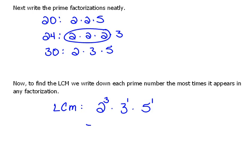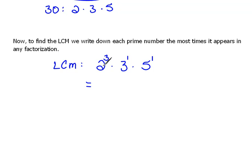Now in order to find the LCM, we just multiply those together. So 2 to the third power means 2 times 2 times 2, which would be 8, times 3 to the first would be 3, and 5 to the first would be 5. So here we have 8 times 3, which is 24, times 5, which is 120.